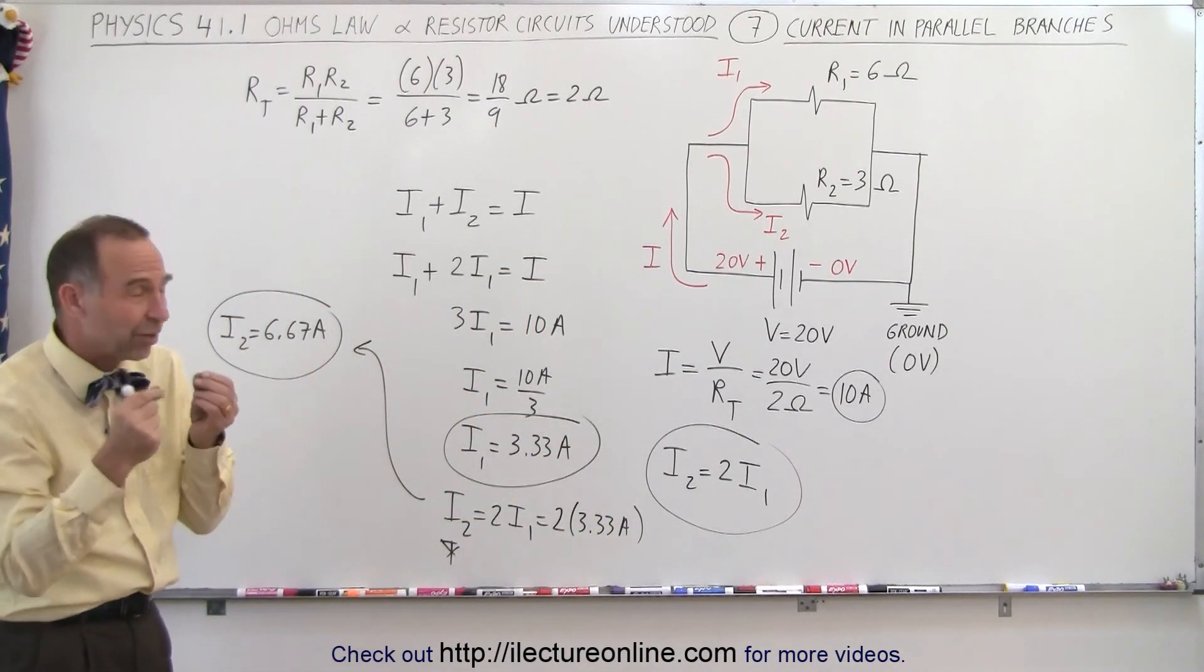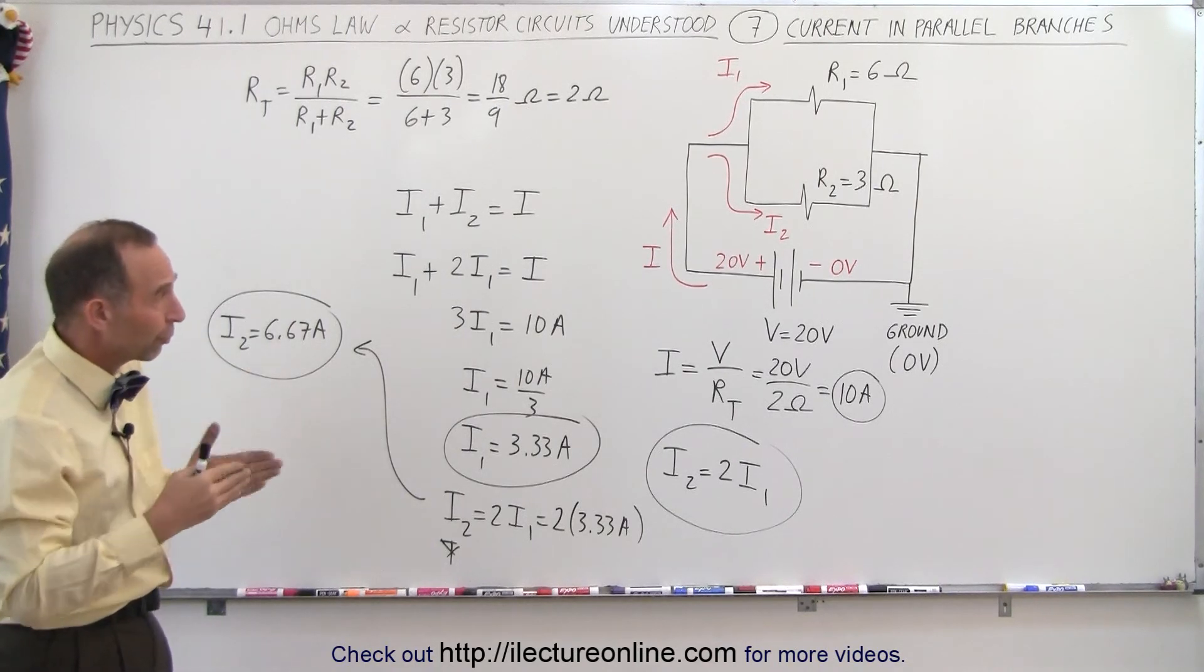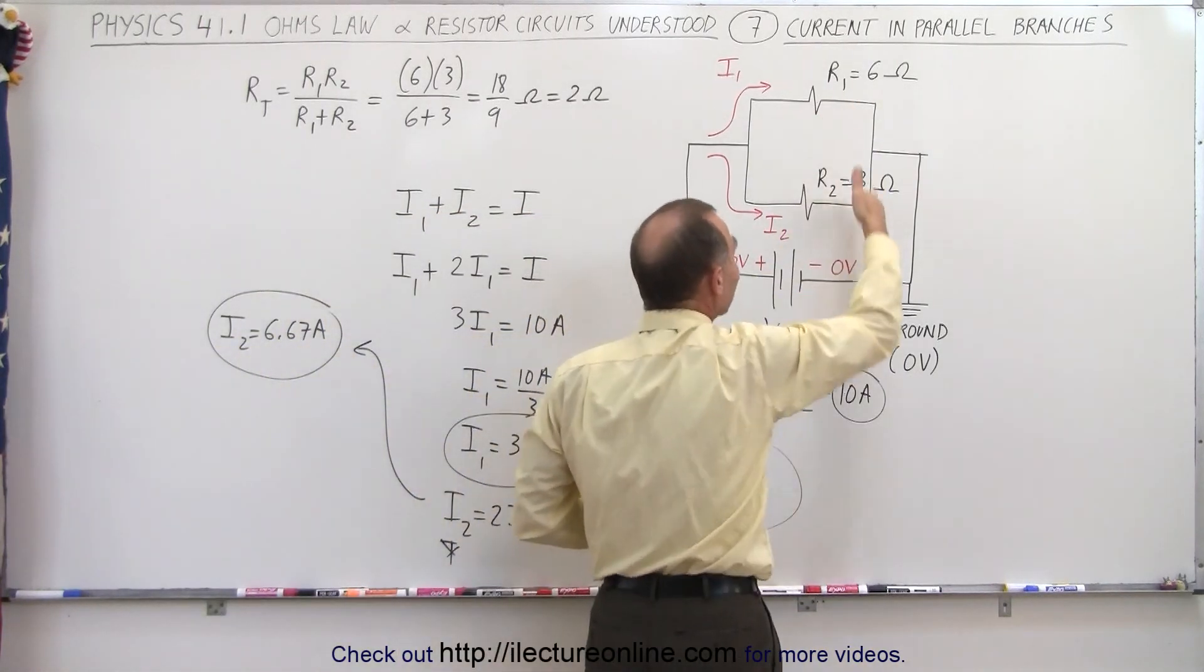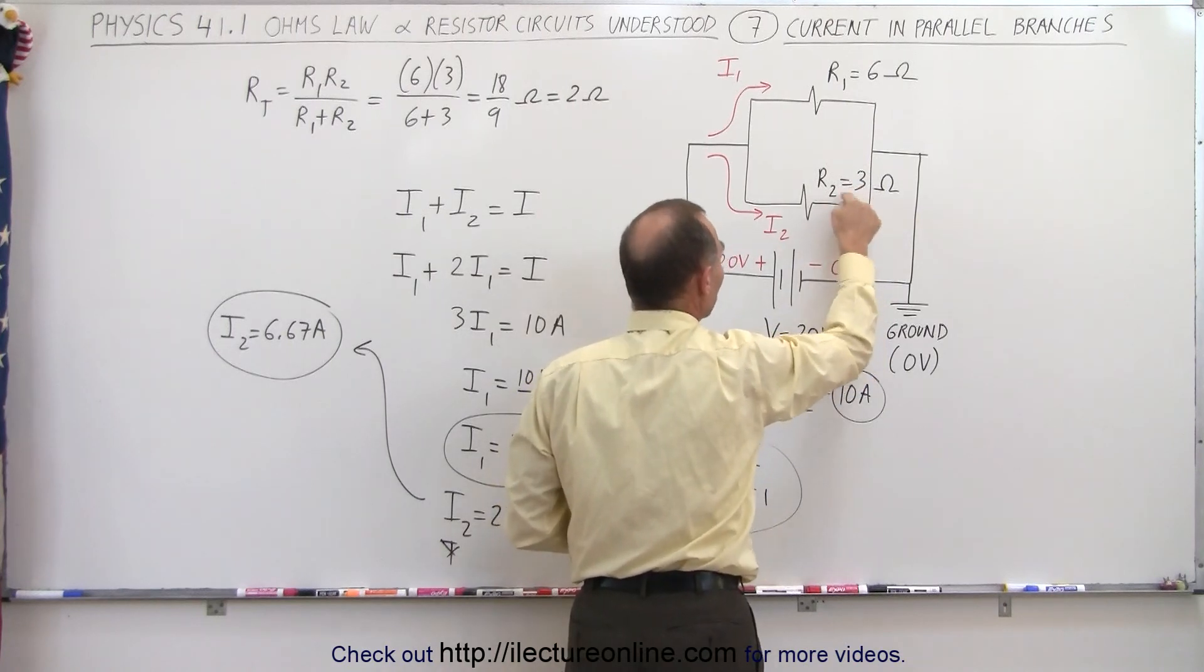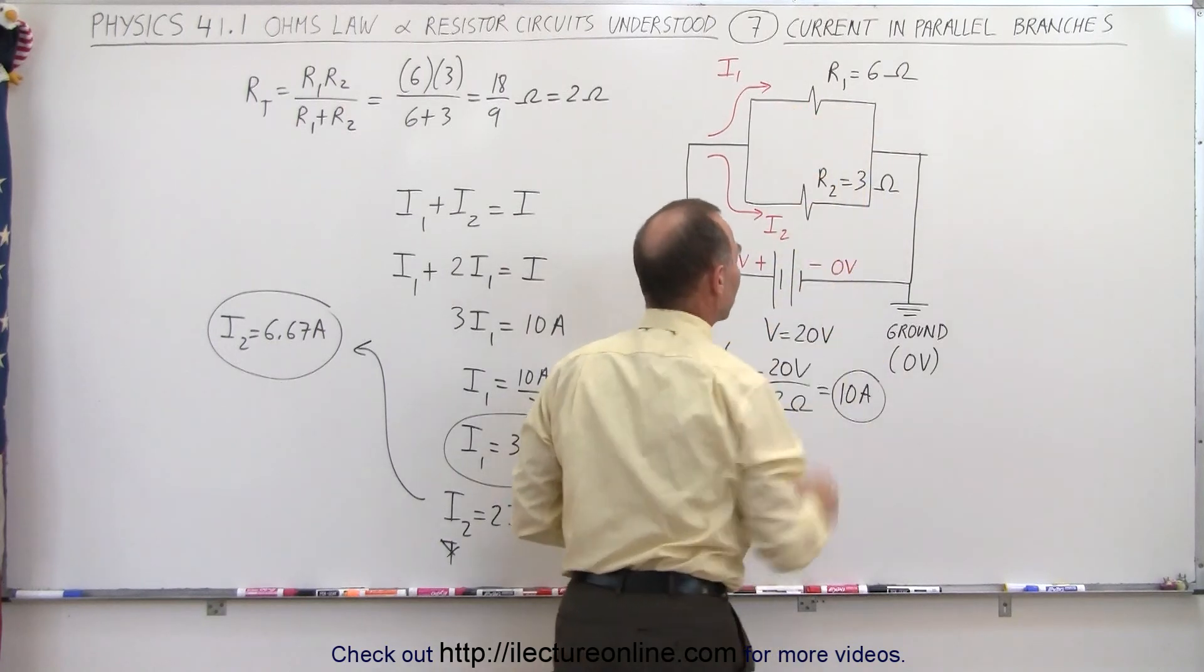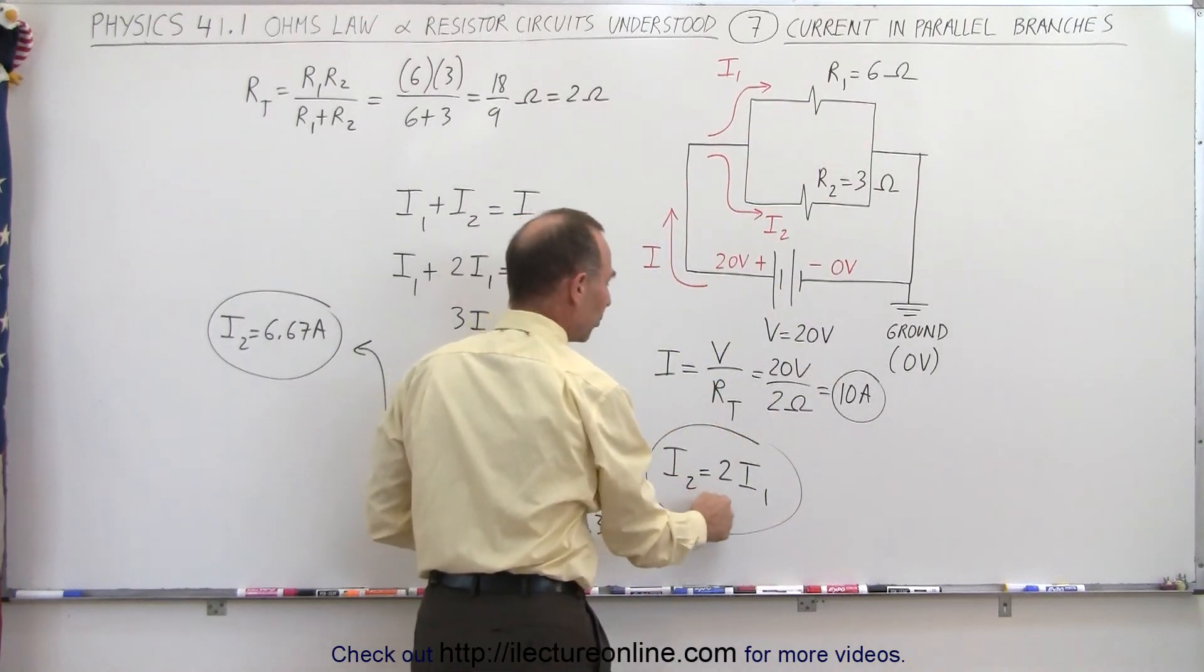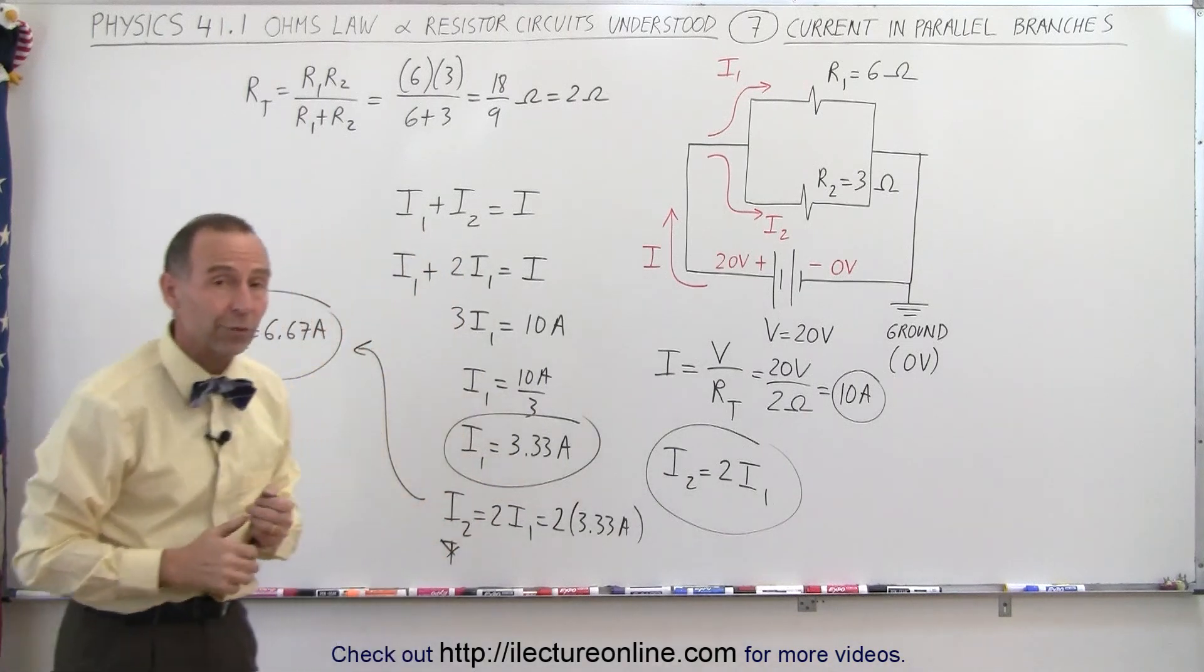So here again, we want to see conceptually, if there's a parallel branch and you want to figure out how much current flows to one branch and how much current flows to the other branch, just look at the relative size of the resistors. If this is half the resistance, it will get twice the current. Double the resistance, it gets half the current. So it's easier to say that this current will be twice the current over here, so I2 will be twice I1. Together, it's the total current, and that's how you find the currents in each branch.